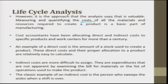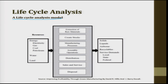Measuring and quantifying the cost of all materials and resources required to create a product is a basic of manufacturing. Cost accountants have been allocating direct and indirect costs to specific products and work centers for more than a century. An example of direct cost is the amount of stock used to create a product. Indirect costs are more difficult to assign — the classic example is the person who sweeps the floor when a shift is over. In the LCA model the resources, stages from raw material extraction through assembly, distribution, sales, service, and disposal, along with by-products such as solid waste, liquid waste, airborne emissions, and recyclables, are all added up in the product life cycle analysis model.